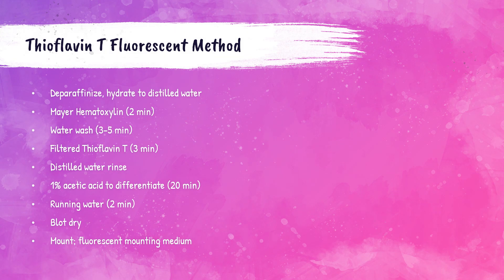To perform the thioflavin T fluorescent stain, tissue needs to be deparaffinized and hydrated to distilled water. Stain with Mayer's hematoxylin for two minutes, then wash with water for three to five minutes. Next, stain with filtered thioflavin T for three minutes, then rinse with distilled water. Differentiate with 1% acetic acid for 20 minutes. After this, wash in running water for two minutes, blot dry, and mount using a fluorescent mounting medium.